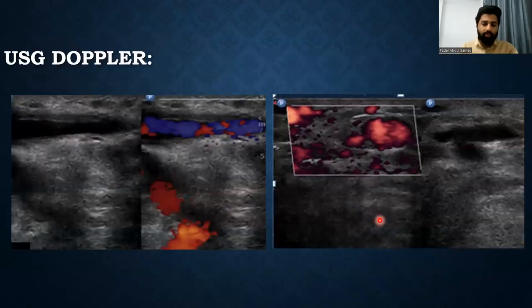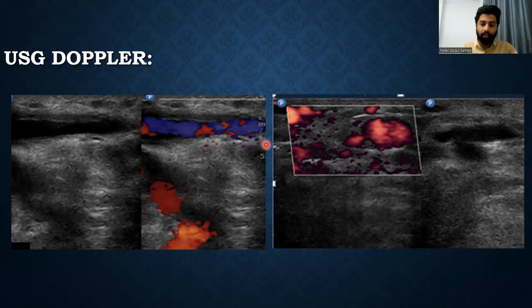The USG Doppler of the patient was done. On Doppler, the dilated vascular channels in the subcutaneous plane were noted to be dilated venous channels. Also, the deep venous system was not well appreciated, which is suggestive of hypoplasia or aplasia.